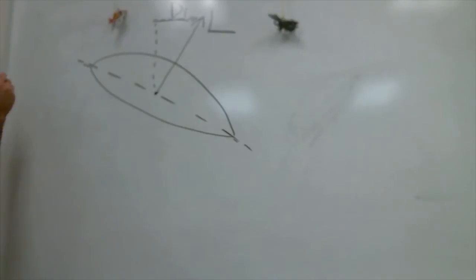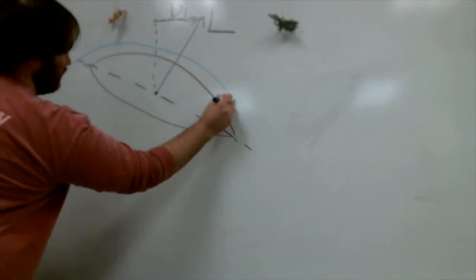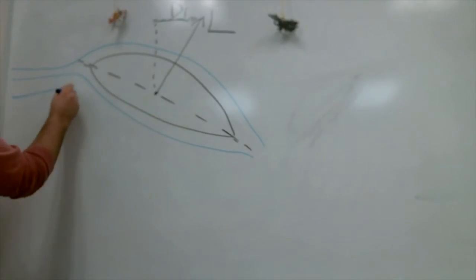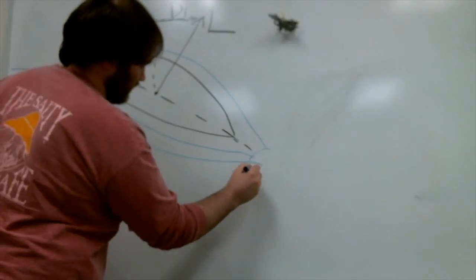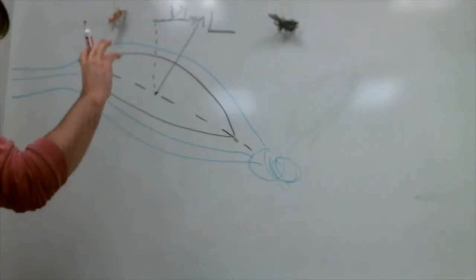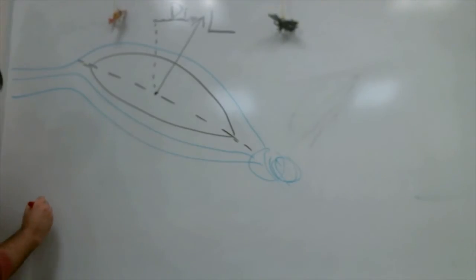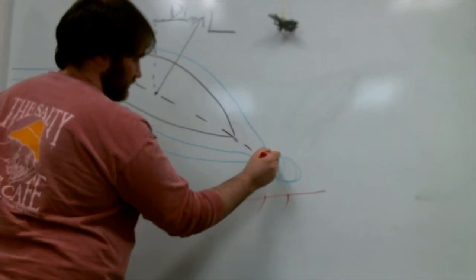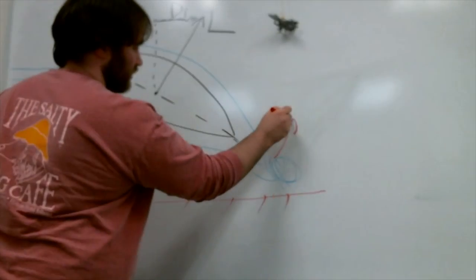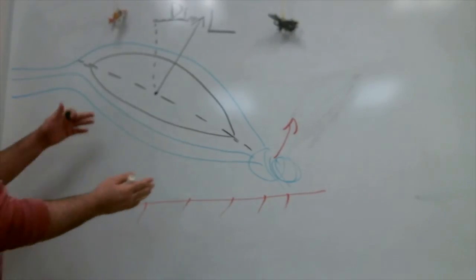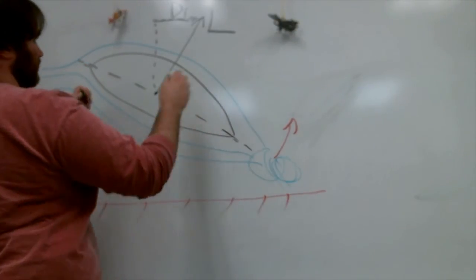And now, as air flows over your airfoil, represented with this lovely blue marker, it creates downwash in this area. What the ground effect does, and this red will be the ground effect, as the wing approaches the ground, the ground causes this downwash to force upward.